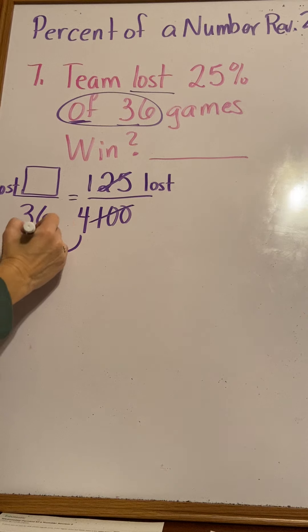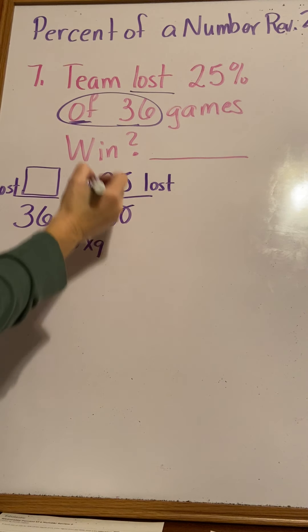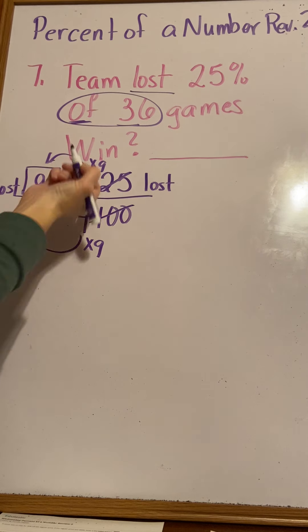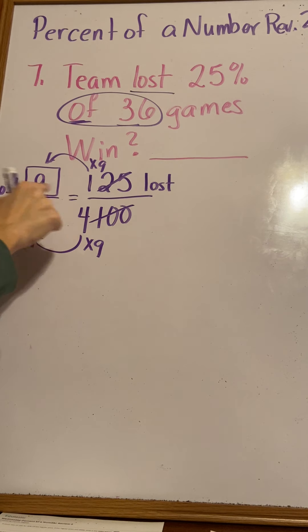Here we go. 4 times 9 is 36, so 1 times 9 is 9. They lost 9 games.